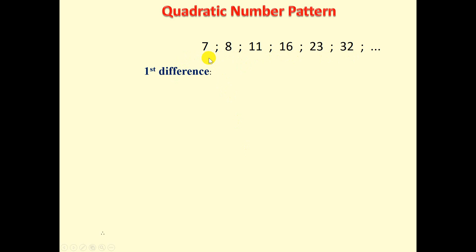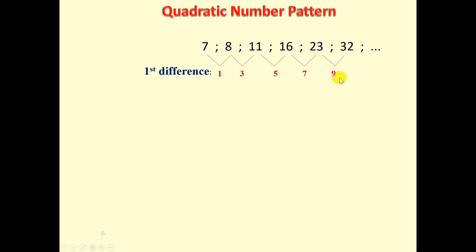So we're going to find the first difference. 8 minus 7 is 1, 11 minus 8 is 3, 16 minus 11 is 5, 23 minus 16 is 7, 32 minus 23 is 9.